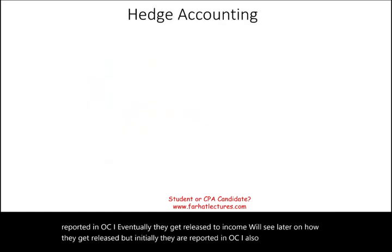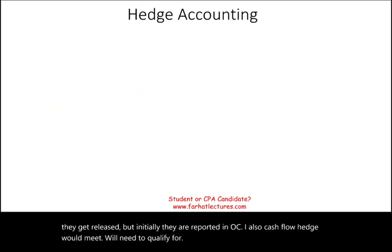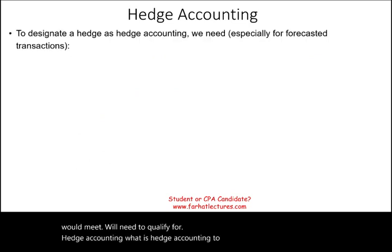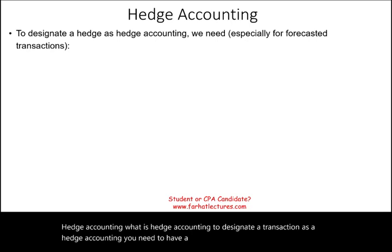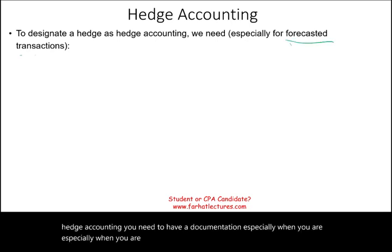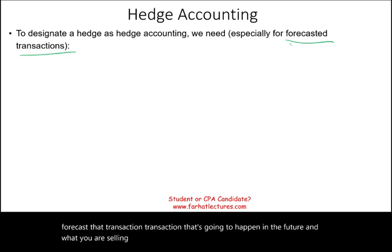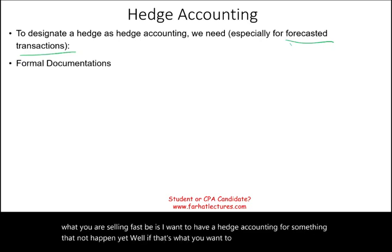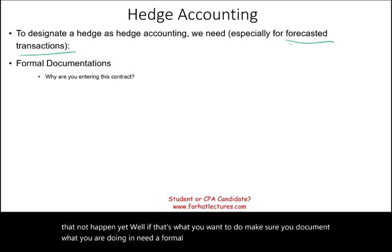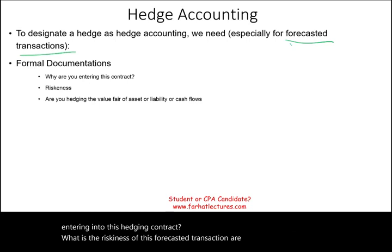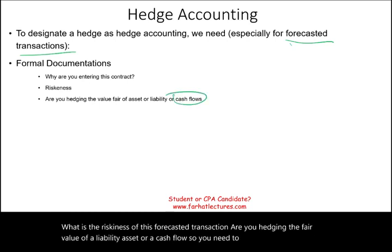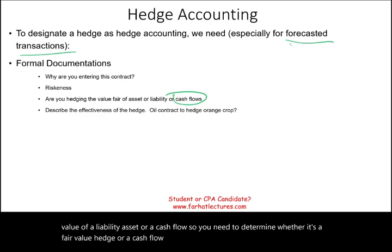Cash flow hedges need to qualify for hedge accounting. To designate a transaction as a hedge, you need formal documentation — especially when hedging a forecasted transaction that's going to happen in the future. You need to tell the FASB why you are entering into this hedging contract, what the riskiness of the forecasted transaction is, and whether you are hedging a fair value or a cash flow. You must spell all of this out in the documentation.